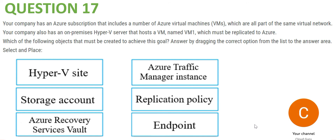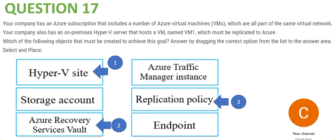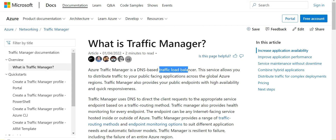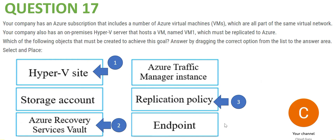Question 17: there is a Hyper-V site, so we use a Hyper-V site first. Since the question is about replicating to Azure, we also need a replication policy and a Recovery Services Vault — because once replicated, recovery can happen from that vault. A storage account is just for storing files and is not relevant here. Traffic manager, load balancer, and endpoints serve different networking purposes.